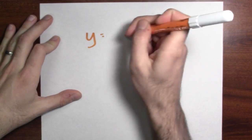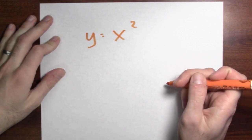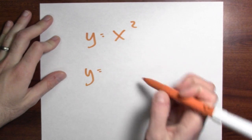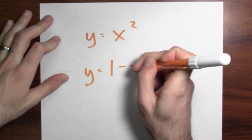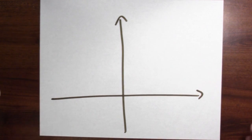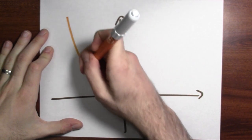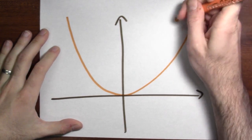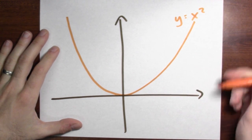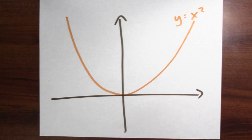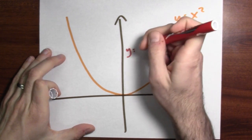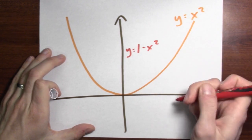Let's find the area between two parabolas. I want to find the area between the graph y equals x squared and the graph of y equals 1 minus x squared. As usual, let's start by graphing. Here's my coordinate plane. I'll draw a graph of y equals x squared, and the other curve is y equals 1 minus x squared.